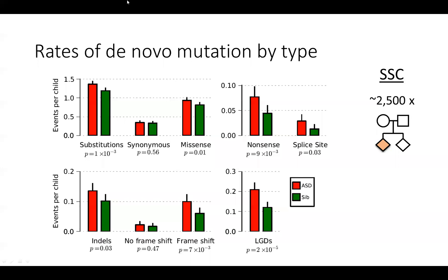We ended up generating whole exome sequence data from about 2,500 such families from the Simons Simplex Collection. The main findings we observed involved a framework for studying novel copy number variants that is representative of what we do with non-coding variants as well. Through the exome sequencing data from these families, we were able to identify variants present in the children but not present in their parents.